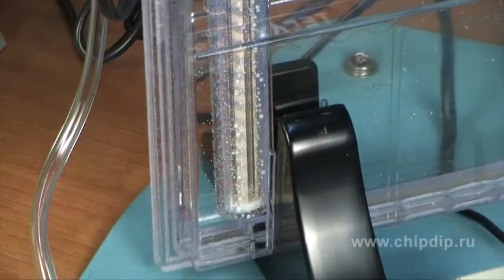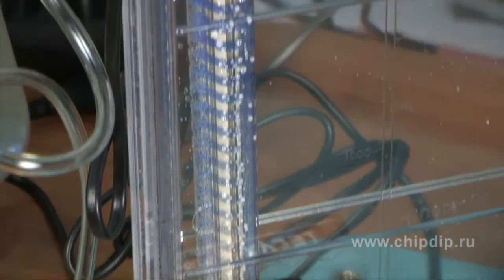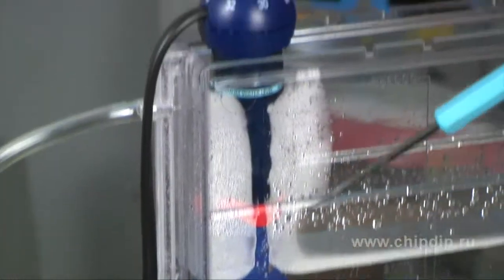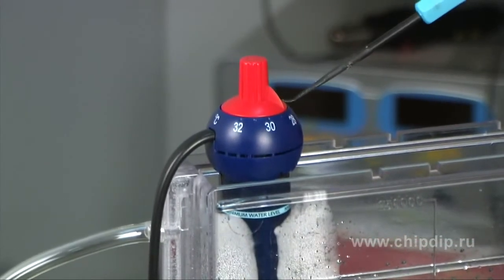The temperature in the tank can be increased with a heater equipped with a regulator. To speed up the process of etching and make it more even, the liquid is mixed up with an air compressor.